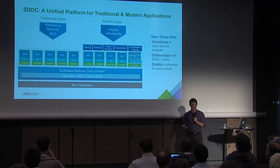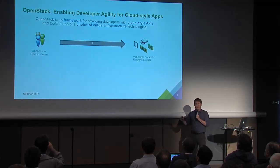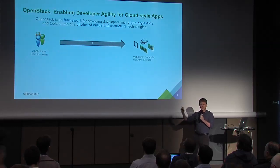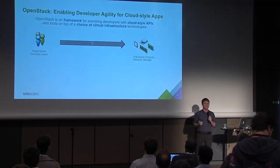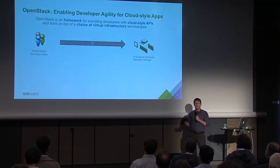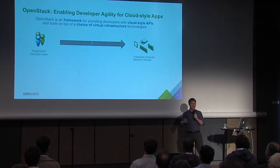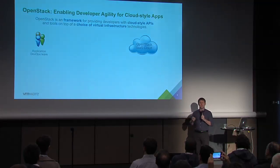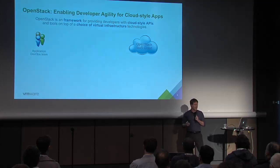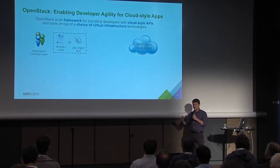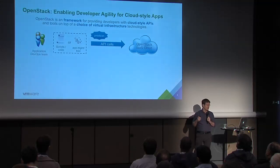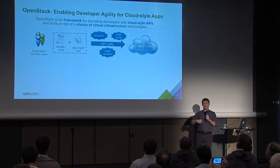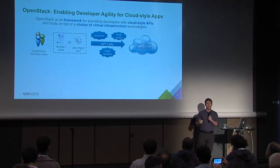Our view of OpenStack is that it's a framework for providing developers with cloud-style or Amazon APIs on top of their choice of underlying infrastructure. You have a team developing a new cloud application that needs access to resources, but they don't want to worry about whether it's a VMware hypervisor or HP hardware. So you want to abstract those resources using good cloud abstractions and let them automate against them — writing scripts against the APIs, building their own tools, or using third-party tools. They're making programmatic calls: provision my workload, scale my workload up, scale it down, redeploy with a new version.